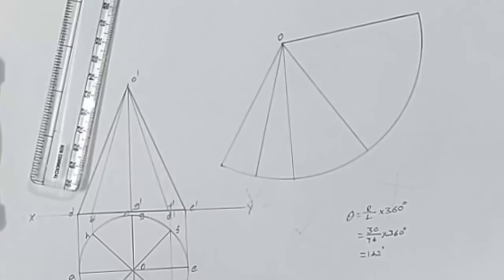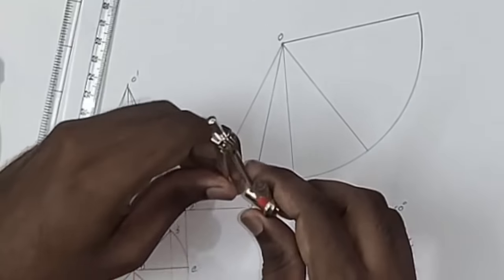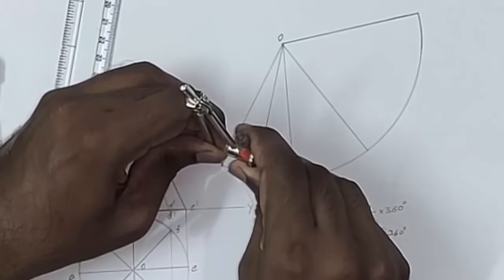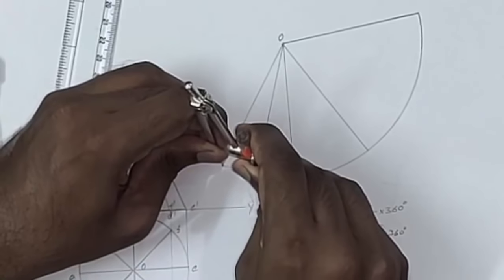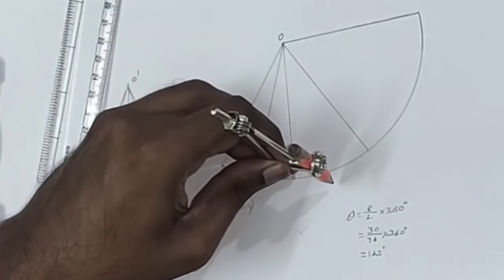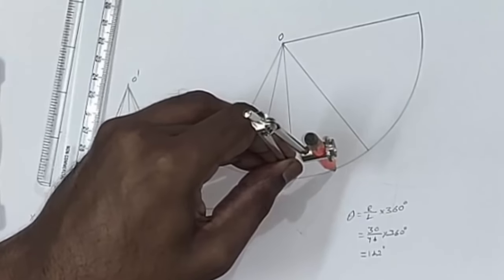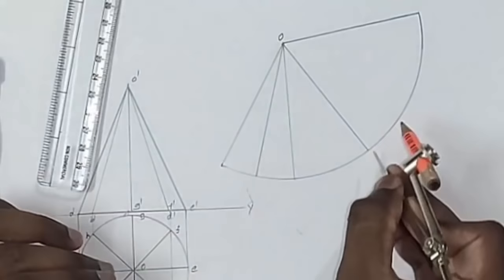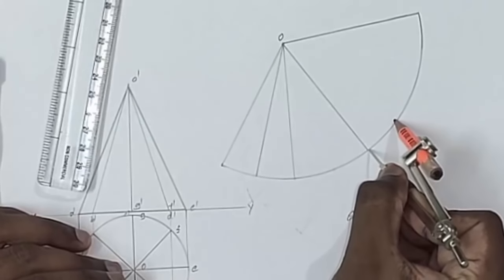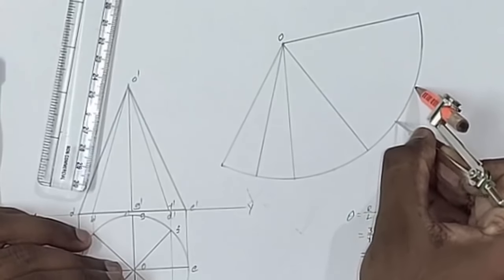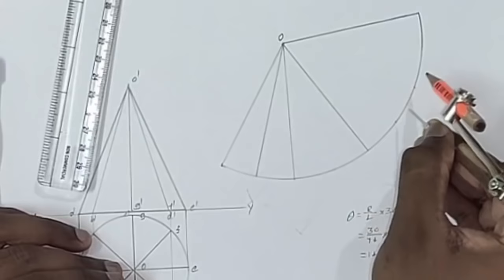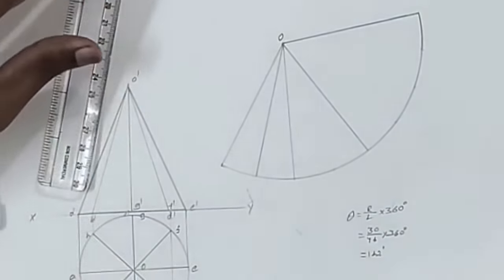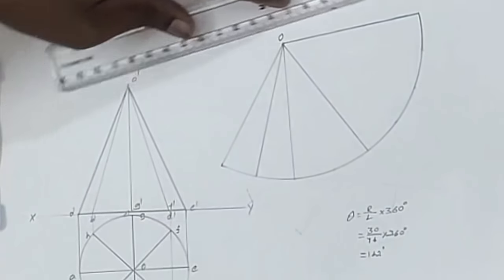Now take your compass and measure the distance of one part and cut an arc here. Similarly, mark that 4 more times here. So now we have divided this sector into 8 equal parts.